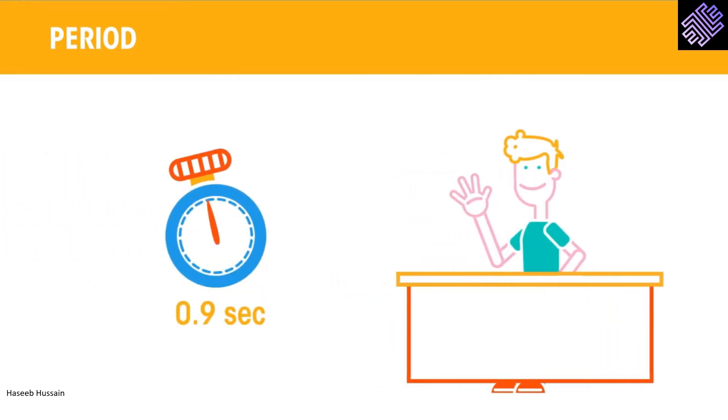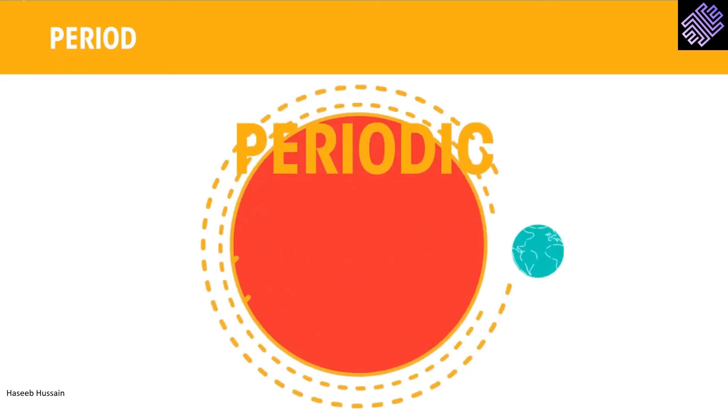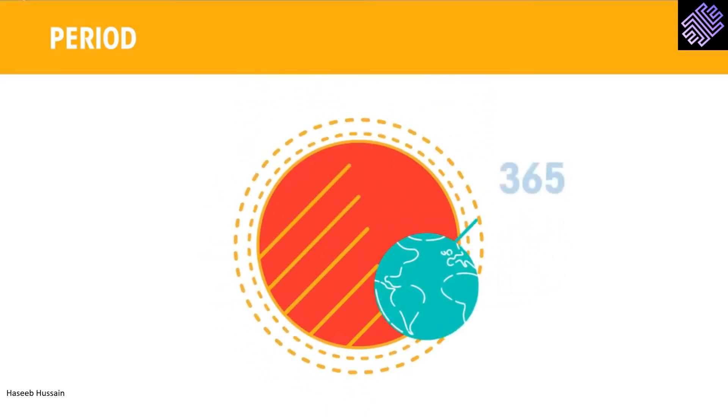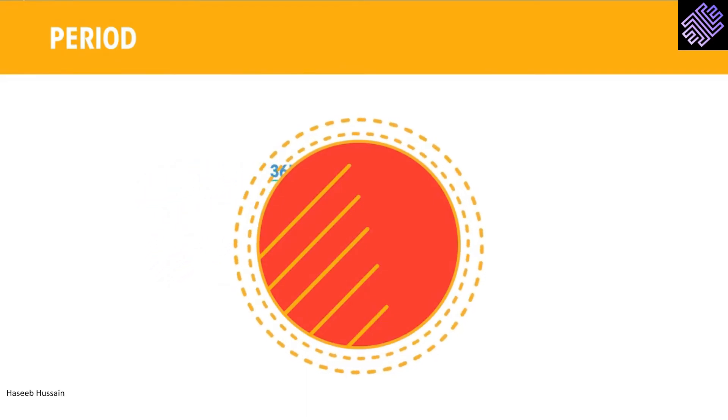When something happens repeatedly, we say that the event is periodic, and refer to the time for the event as time period. For example, the period of the Earth to orbit the Sun is 365 days. The period of the day is 24 hours.